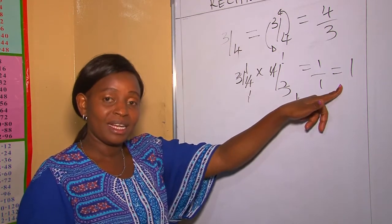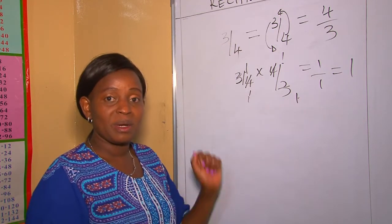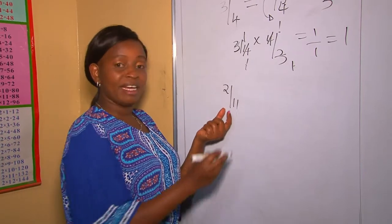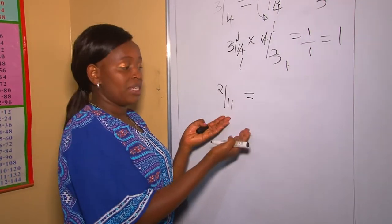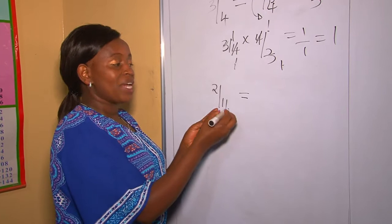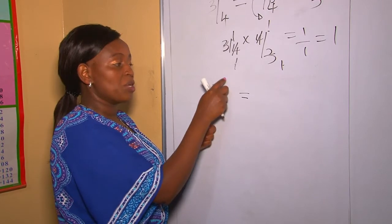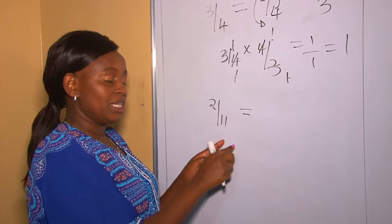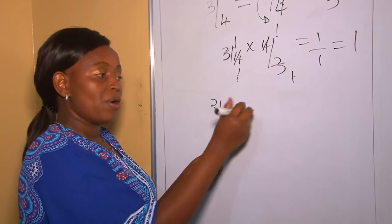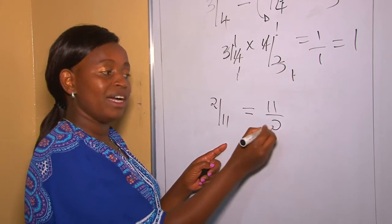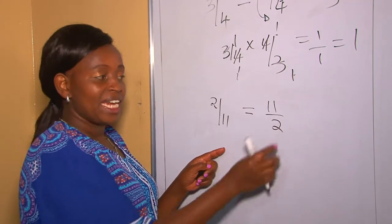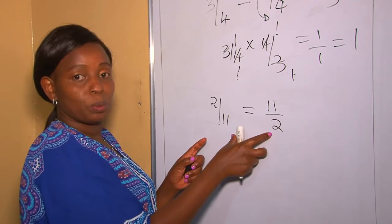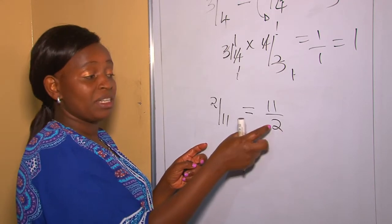Let's do our next example. The reciprocal of two over eleven: remember we are changing the denominator to become our numerator and our numerator to become our denominator. Therefore it shall be eleven over two, and this is our reciprocal.